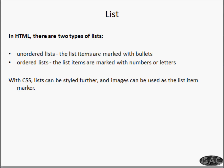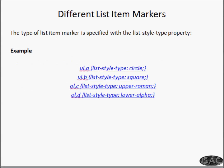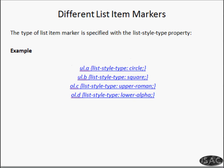The type of list item is specified with the list-style-type property. You can see here we are setting circle, square, upper Roman, lower alphabet — all of these can be applied to ordered and unordered lists. We can have different classes A and B — it's up to you. Let us understand how it works.